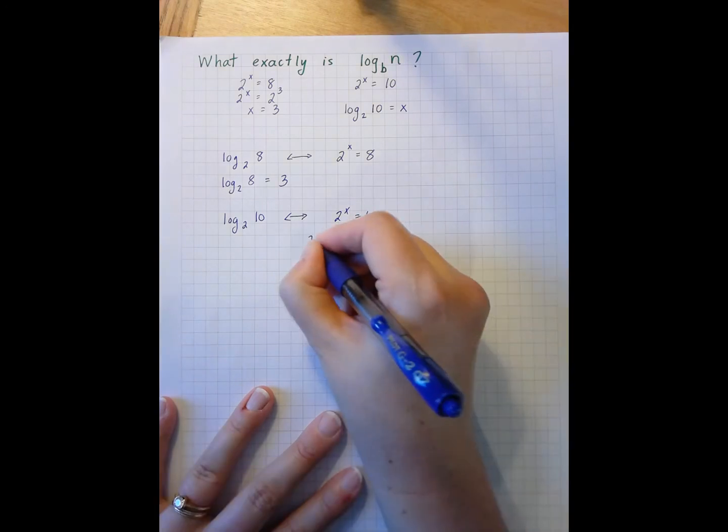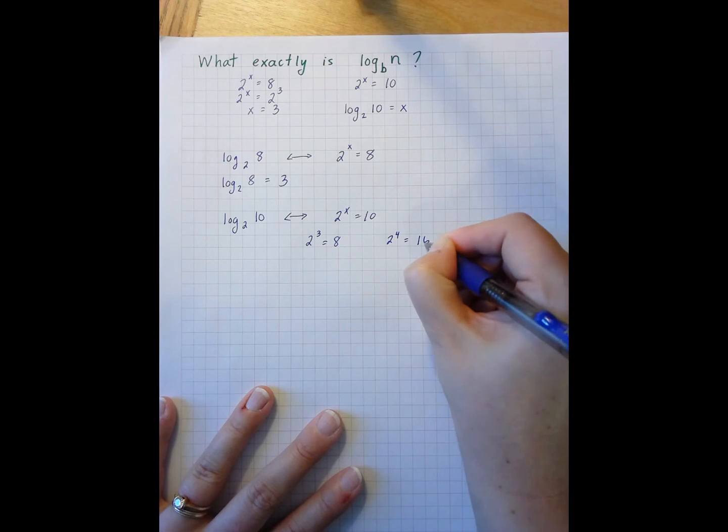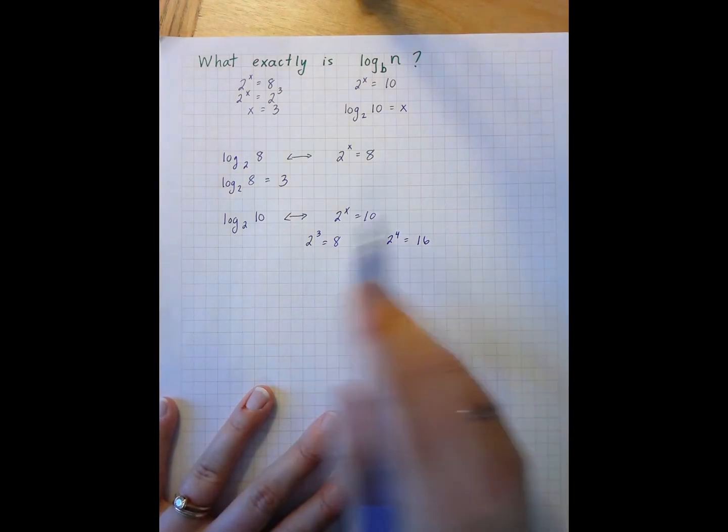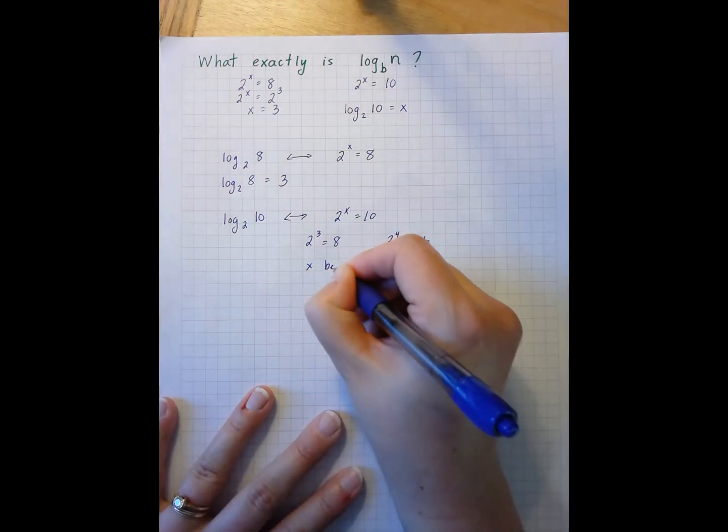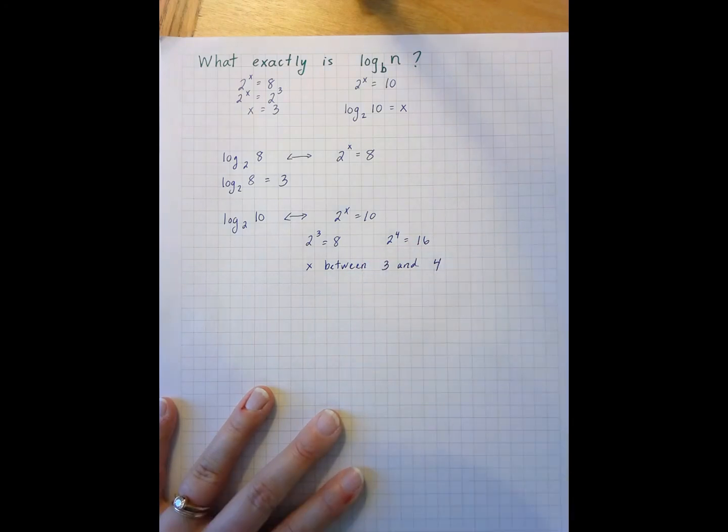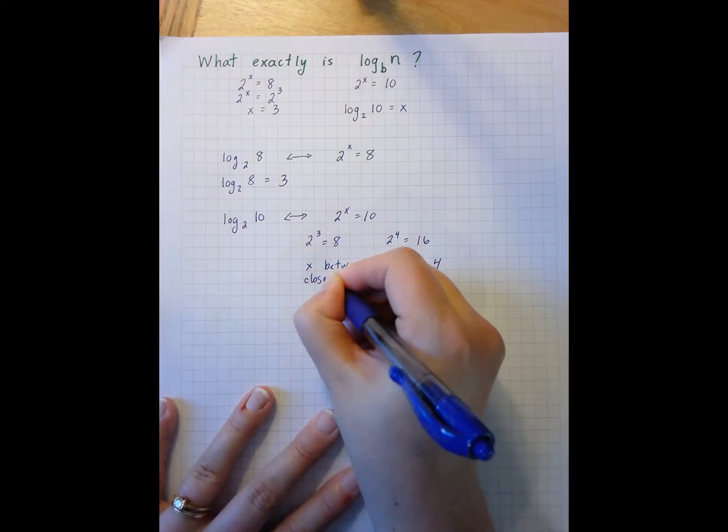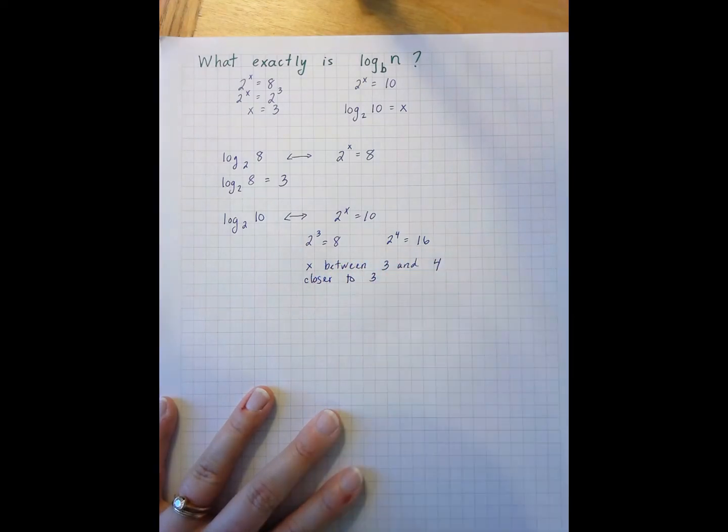and I know that 2 to the 3rd equals 8, and 2 to the 4th equals 16, that x is going to be between 3 and 4. And in fact, it's going to be closer to 3 since 10 is closer to 8 than to 16.